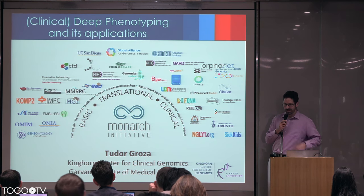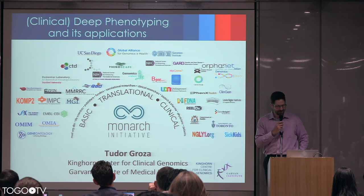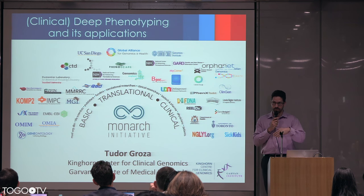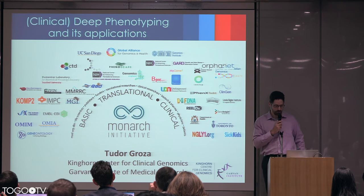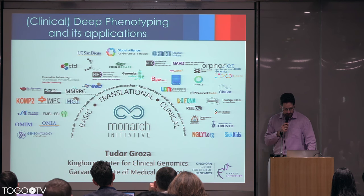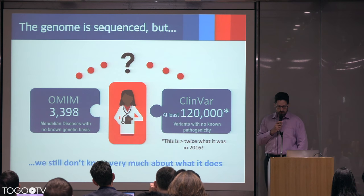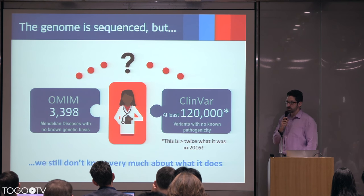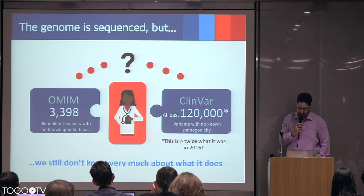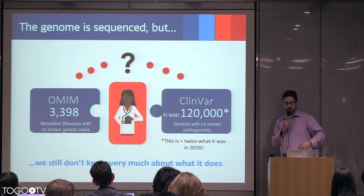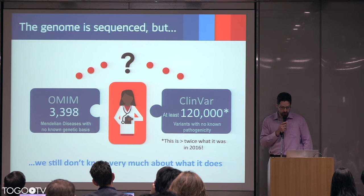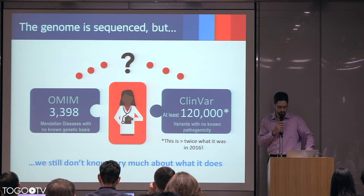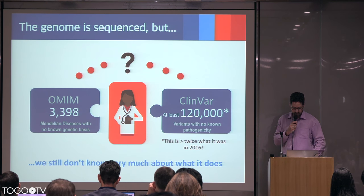The title has 'clinic' slightly in brackets because I'm crossing from basic to translational and back with respect to the work being done. We start from the idea that the genome is sequenced, but if you really look at genotype-phenotype associations, we don't know that much about them — especially about the pathogenicity and atypical expression of variants reported in the literature and existing variant repositories.